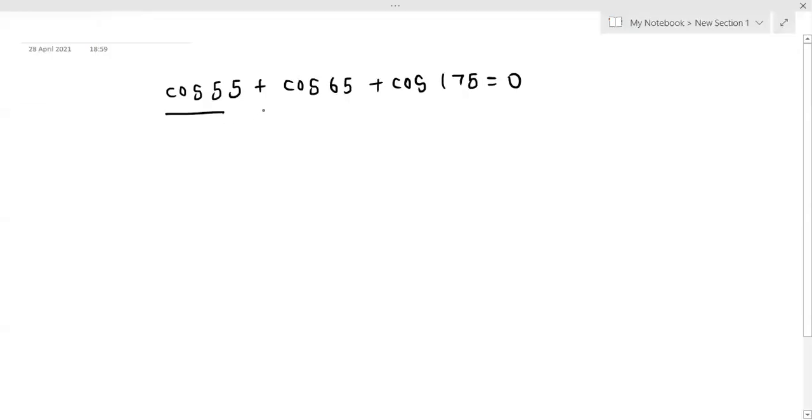We have a problem with cos of 55, cos of 65, and cos of 175. We need to prove this sum of values.